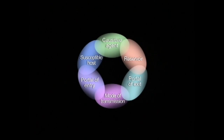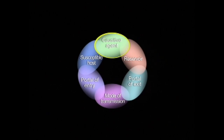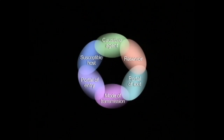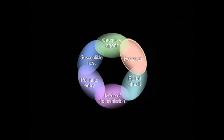Let's go over it. See the six links here? They all need to be present, and it doesn't matter which one comes first. But for simplicity, we will start at the top. The agent is the pathogen — germ, bug, what have you. So let's say our agent is E. coli. Nasty little bug. Exactly. So our agent is E. coli. The reservoir is our own GI tract — the portal of exit. I get it.